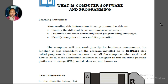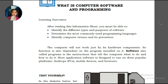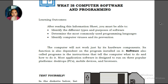On our previous lessons, we learned about the hardware components of the computer system. This is the counterpart of hardware, which is software — also called programs — the instructions that tell the computer what to do and how to do it.